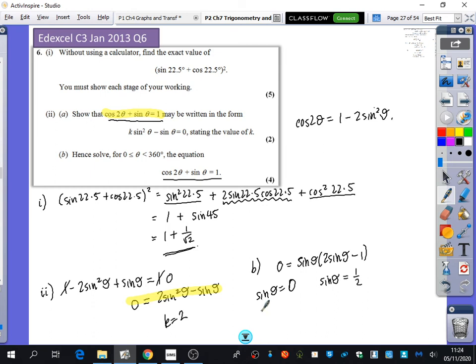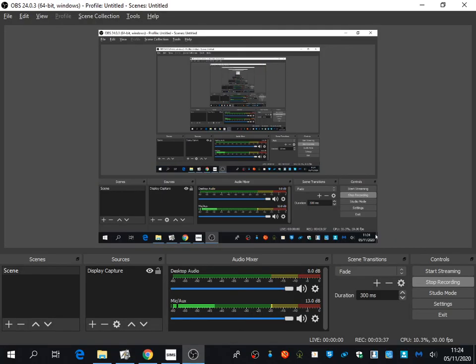And what are the values of theta that give you 0? 0, 180, and 360, but it's not in the range. So you just get 0 and 180. And what values of theta give you a half? 30 and 150, which is 180 minus 30. So we've done the whole question without a calculator. Okay? Just a bit of a recap from some of those things that you will have been having a look at for homework.